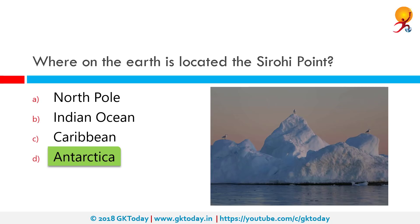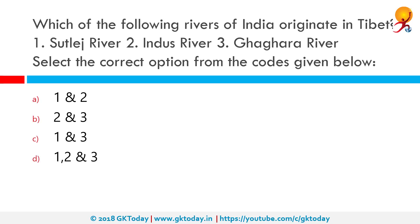Giriraj Singh Sirohi was the first person to set foot on that region. He researched in biology at McMurdo Station in 1960–61, for 100 days at sub-zero temperatures. The point was named after him by the US government.